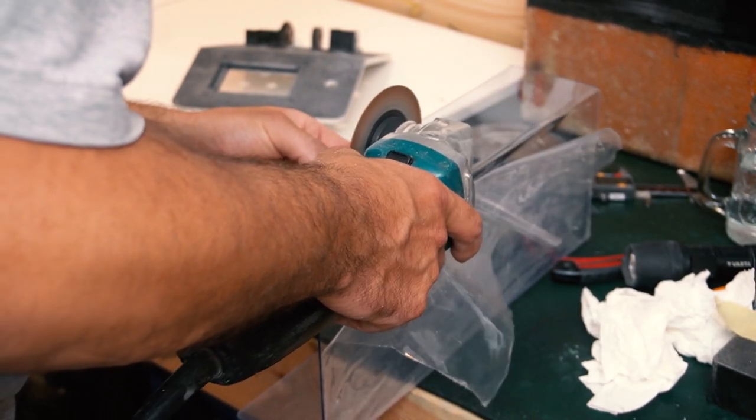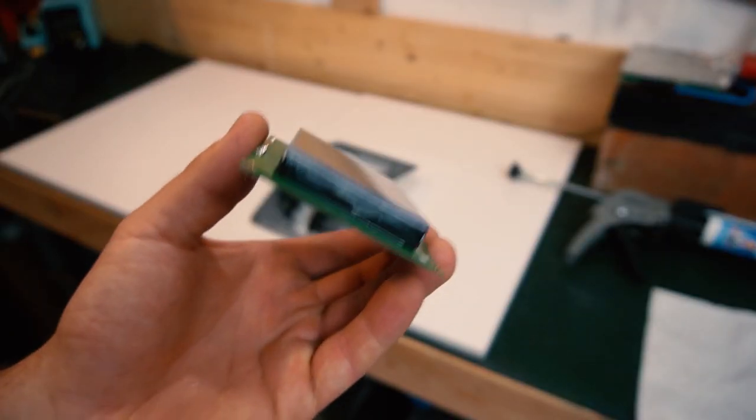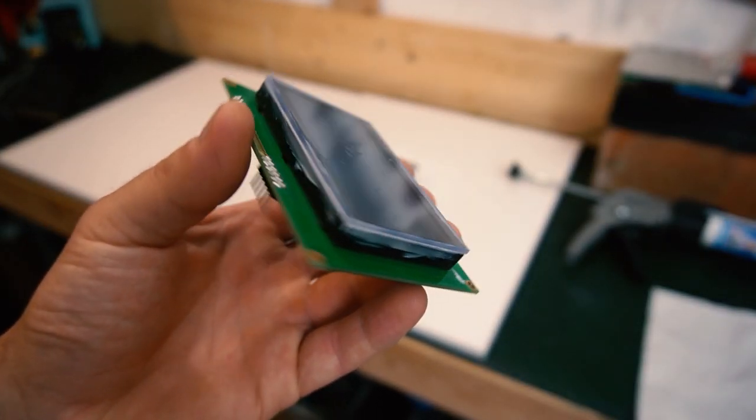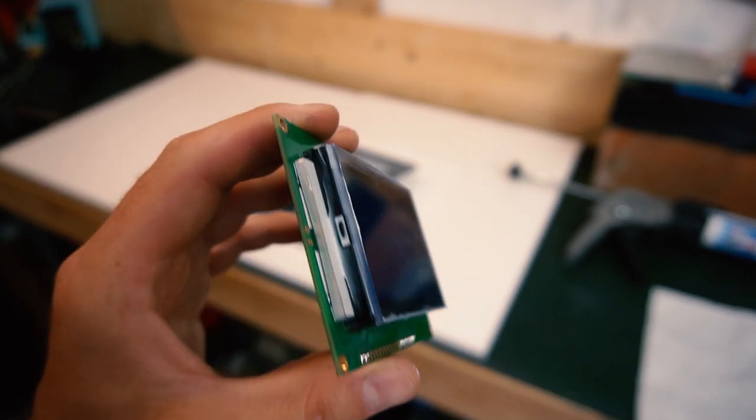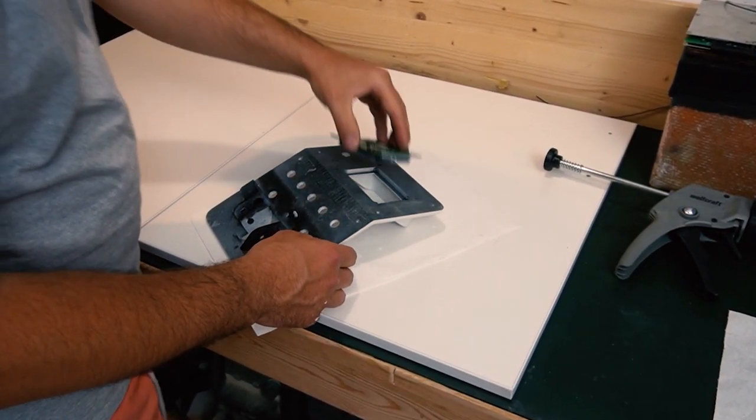And now the assembly of the control panel can begin. I cut display protection from transparent polycarbonate. I sealed it with silicone, so it should prevent dust particles and water entering the display.